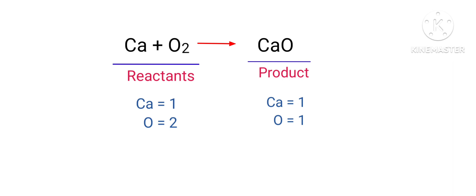To balance the chemical equation, we need to make use of coefficients. A coefficient is a number that we place in front of a chemical formula.